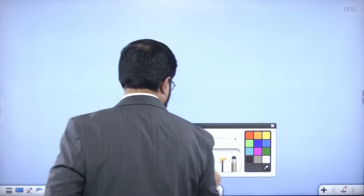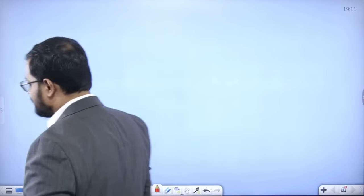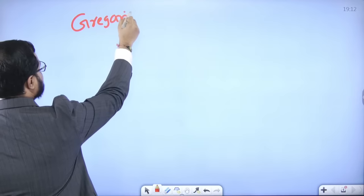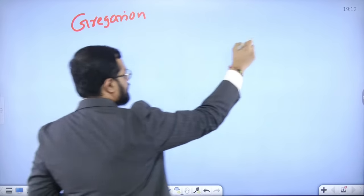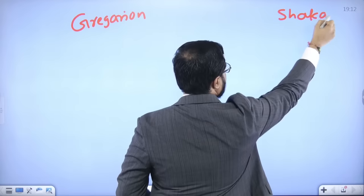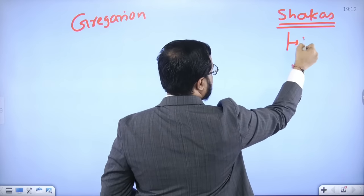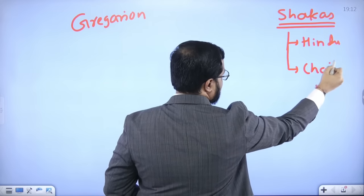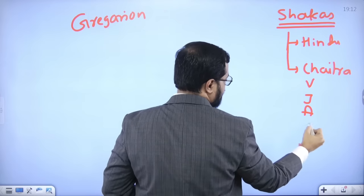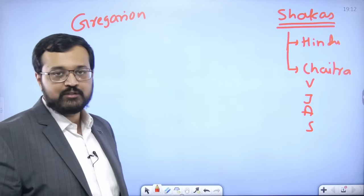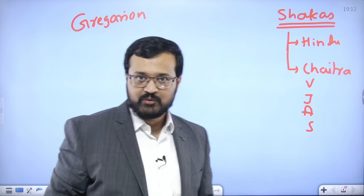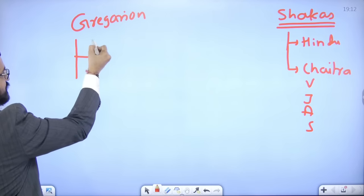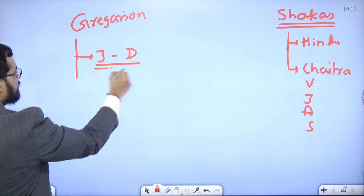What is the meaning of the timeline? Have you heard of the Gregorian calendar and the Shaka calendar? There is the Gregorian calendar, and there is the Shaka calendar. The Shaka calendar is also considered the Hindu calendar, and its months include Chaitra, Vaishakh, Jyeshtha, Ashadh, Shravan — up to Falgun — 12 months. Now, similarly there is the English calendar, which is basically the Gregorian calendar, running from January to December. Currently it is 2nd November 2022, so 2022 is the year running now.